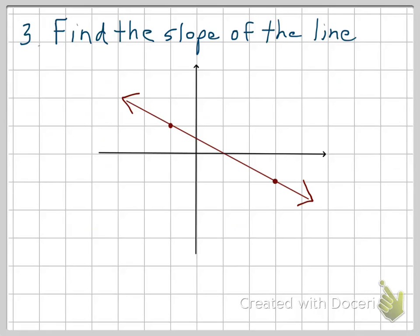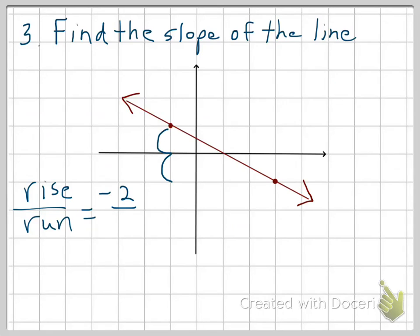Number 3: find the slope of the line from a graph. The slope of a line is rise over run, or the change in y over the change in x. I usually work left to right. Starting at the left point, the rise is going down 2, so the rise is negative 2. Then we go to the right — it looks like 4 — so the run is 4. Simplifying, you get negative 1 half.